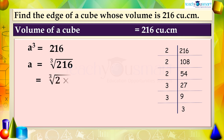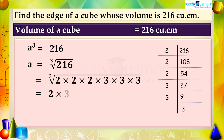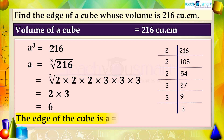The cube root of 216 equals the cube root of 2 × 2 × 2 × 3 × 3 × 3, which equals 6. That is, the edge of the cube is a equals 6 centimeters.